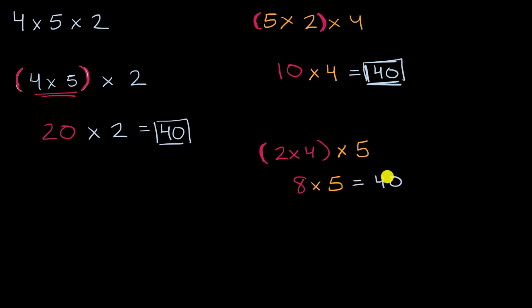So you might see a pattern here. It doesn't matter which order we multiply these things in. In fact, you could write 4 times 5 times 2. You could do the 4 times 5 first, or you could do 5 times 2 first, or you could do 4 times 5 times 2 in any grouping. It doesn't matter which order you multiply these things in. In every case, you are going to get 40.